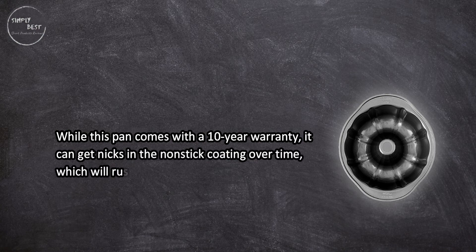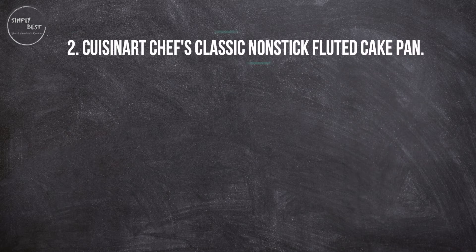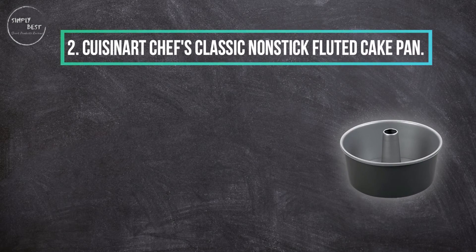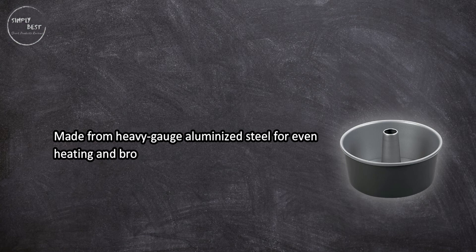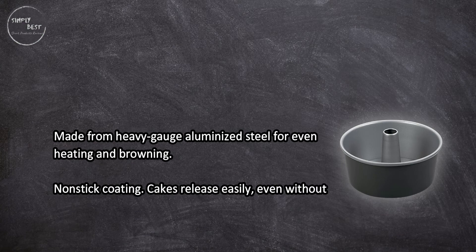At number two, Cuisinart Chef's Classic Nonstick Fluted Cake Pan. Made from heavy gauge aluminized steel for even heating and browning. Nonstick coating, cakes release easily even without extra spray thanks to the shallow grooves.